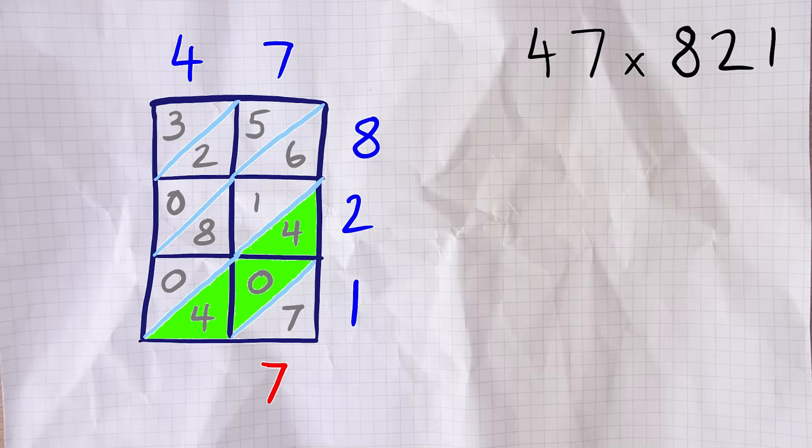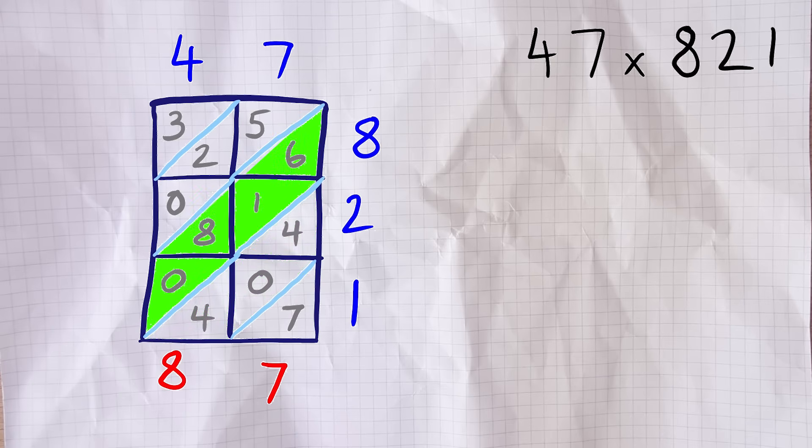The second one is 4 add 4 which is 8. The next one is 6, add 1, add 8, add 0 which is 15. Now we have a two digit answer here. So what you do is you write the last digit, in this case the 5 underneath, and you carry the one over to the next diagonal just like you would do if you're doing column addition. That same technique.